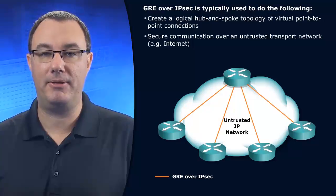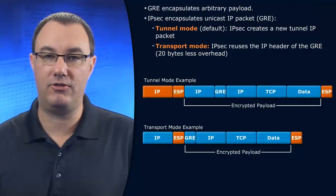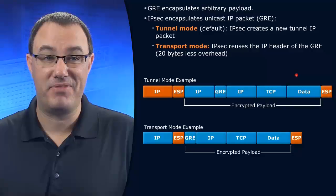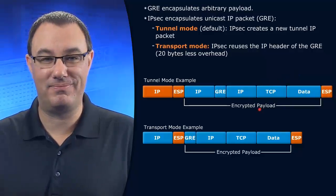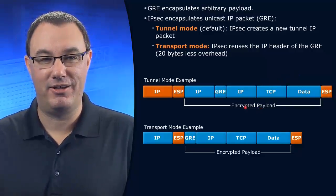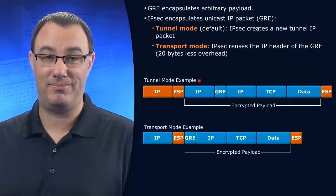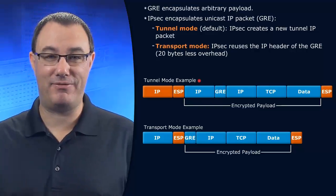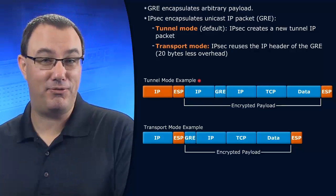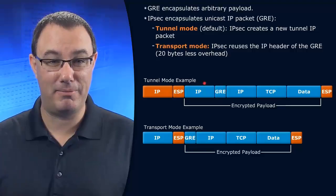GRE over IPsec takes two disparate technologies that are both about headers and puts them together. Generally speaking, you're going to do this in tunnel mode. In IPsec ESP, you can have the IPv4 header embedded within the encrypted packet.